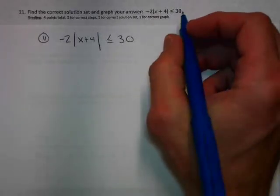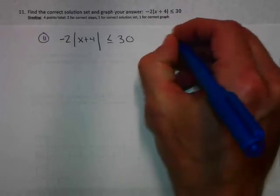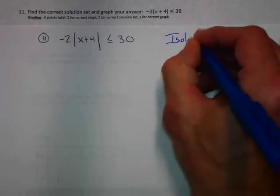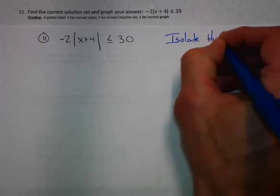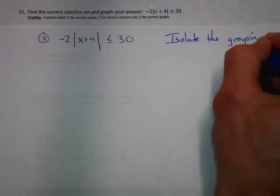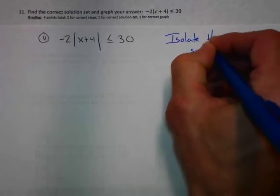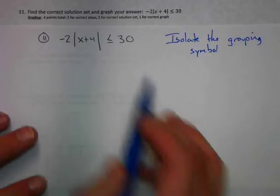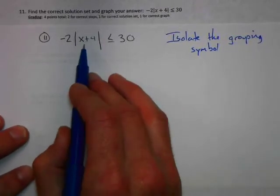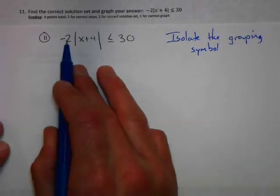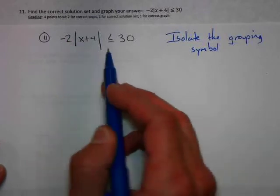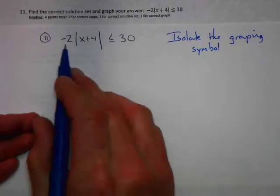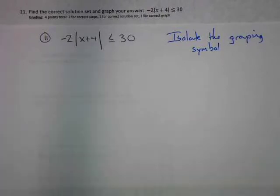The key rule is we have to isolate the grouping symbol. Absolute value is a grouping symbol, so we have our absolute value bars. There's a negative two out there, and we have to isolate the absolute value bars. We cannot distribute through absolute value.